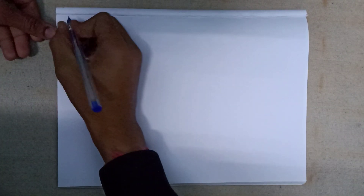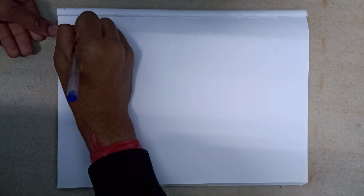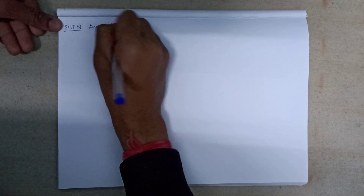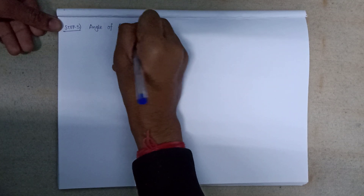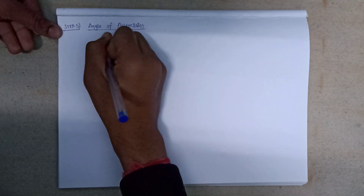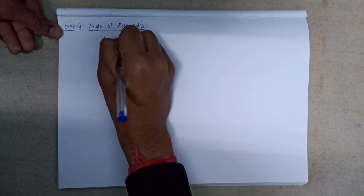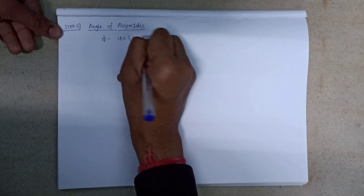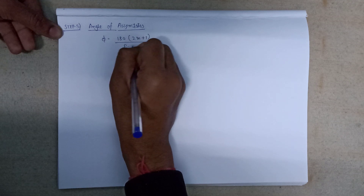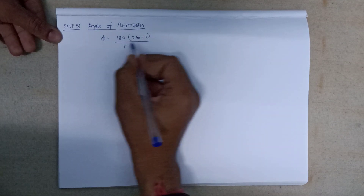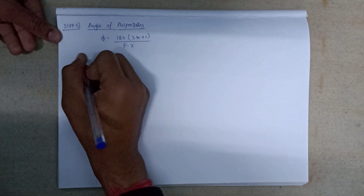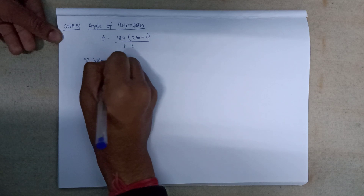Moving on to Step 5: calculation of angle of asymptotes. The angle of asymptotes is determined by the formula: angle = 180 × (2m+1) / (P - Z). For the calculation we first need to determine the value of m, since we know that the value of...